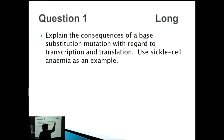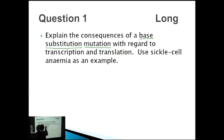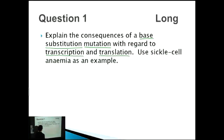The important things to note are the things we need to define. Remember, at the very start we define things, so these are the important things we need to talk about. Given that sickle cell anemia is an example, we won't define that as such. So what is a base substitution mutation? That's our first point.